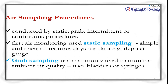The sampling procedure is conducted by static, grab, intermediate, or continuous methods. For air monitoring, static sampling is simple and cheap but requires days of data — an example is a deposit gauge. Grab sampling is not commonly used to monitor ambient air quality and uses bladders and syringes.